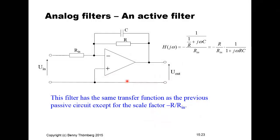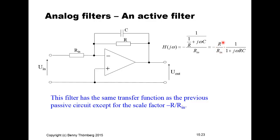Looking at a circuit diagram of an active first-order low-pass filter with an operational amplifier, the corresponding frequency transfer function H(jω) looks almost the same as for the passive filter, except for the level constant K = R/R_in and a minus sign. This is an active filter block corresponding to a first-order low-pass filter.